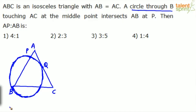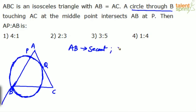AP to AB is what we need to find. Although the question involves a triangle, some properties of circles will come into picture here. If you consider this circle BPQ, then line APB is a secant — a line that cuts the circle at two points P and B. And AQ is a tangent since it only touches the circle at one point.